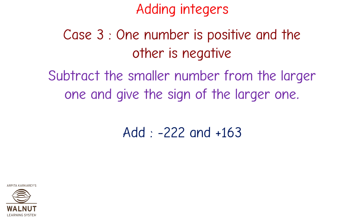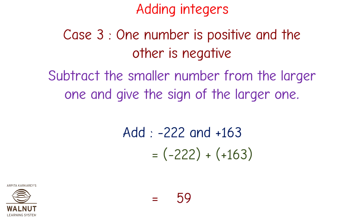Add minus 222 and plus 163. We write the statement: minus 222 plus plus 163. Since one number is negative and one is positive, we subtract the smaller from the larger and give the sign of the larger. The larger number is 222, so the sign will be negative. The answer is 59, so minus 59 is the answer.